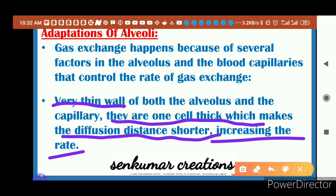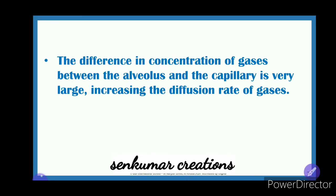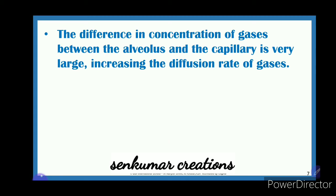The outer covering of the alveolus is a thin membrane — one-cell-thick wall — and the blood capillary is also very thin with a one-cell-thick wall. The second factor is the large difference in gas concentration between the alveolus and capillary. Oxygen concentration is high in the alveolus and low in the blood capillary; carbon dioxide concentration is high in the blood capillary and low in the alveolus. This concentration gradient makes diffusion faster.